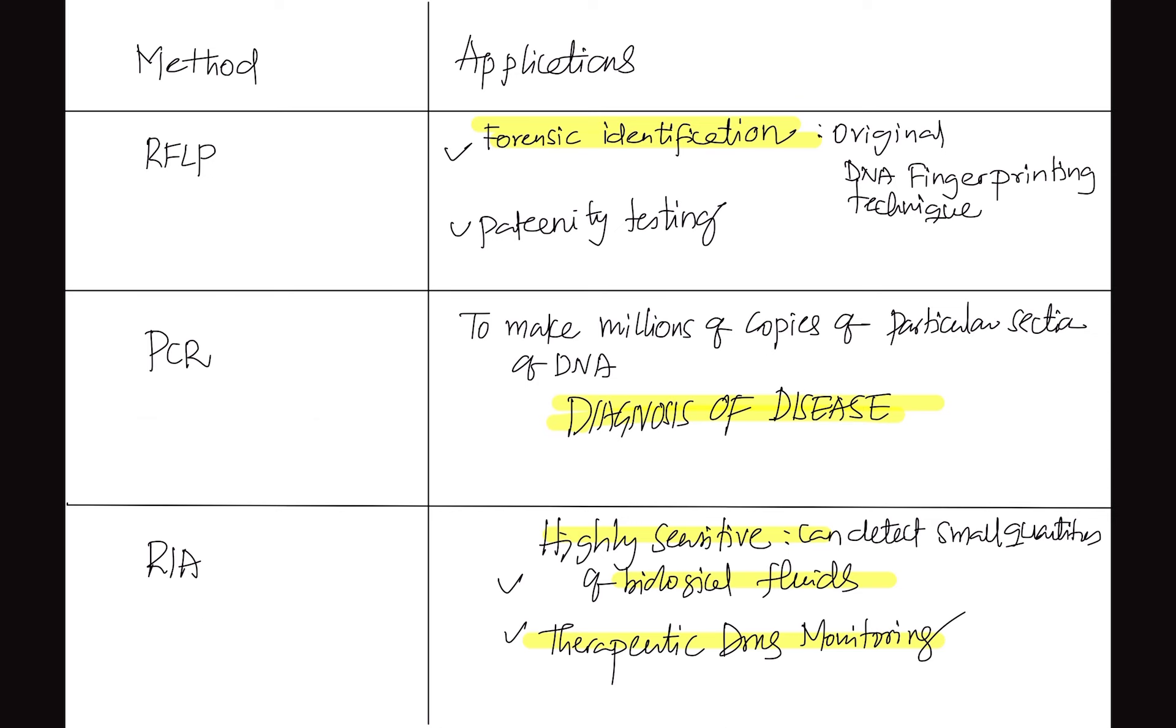RIA, radioimmunoassay is entirely a different one. It is highly sensitive. It can detect even small quantities of biological fluids like TSH, ACTH, enzymes, hormones in the body. And also drug levels, therapeutic drug monitoring. You take lithium - lithium is toxic if it exceeds the therapeutic drug levels. So to detect that, we do radioimmunoassay study. PCR and RIA has come recently. From 2020, 21, 22, 23 it's got repeated.